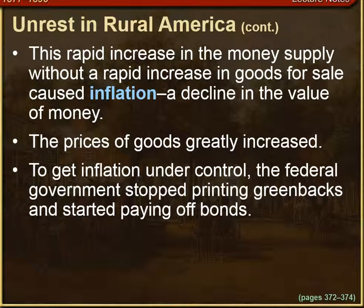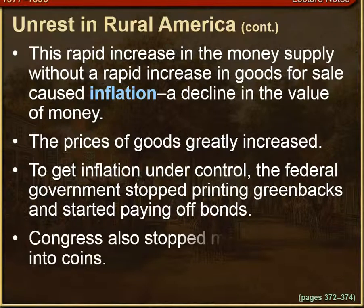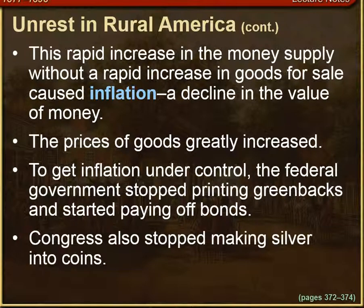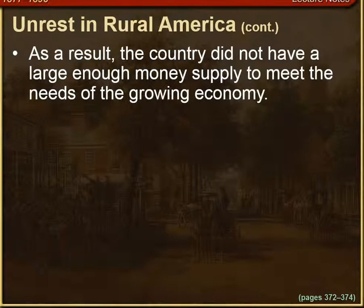To get inflation under control, the federal government stopped printing the greenbacks and started paying off bonds — basically loans that the government had taken out. Congress also stopped making silver into coins. As a result, the country did not have a large enough money supply to meet the needs of a growing economy.